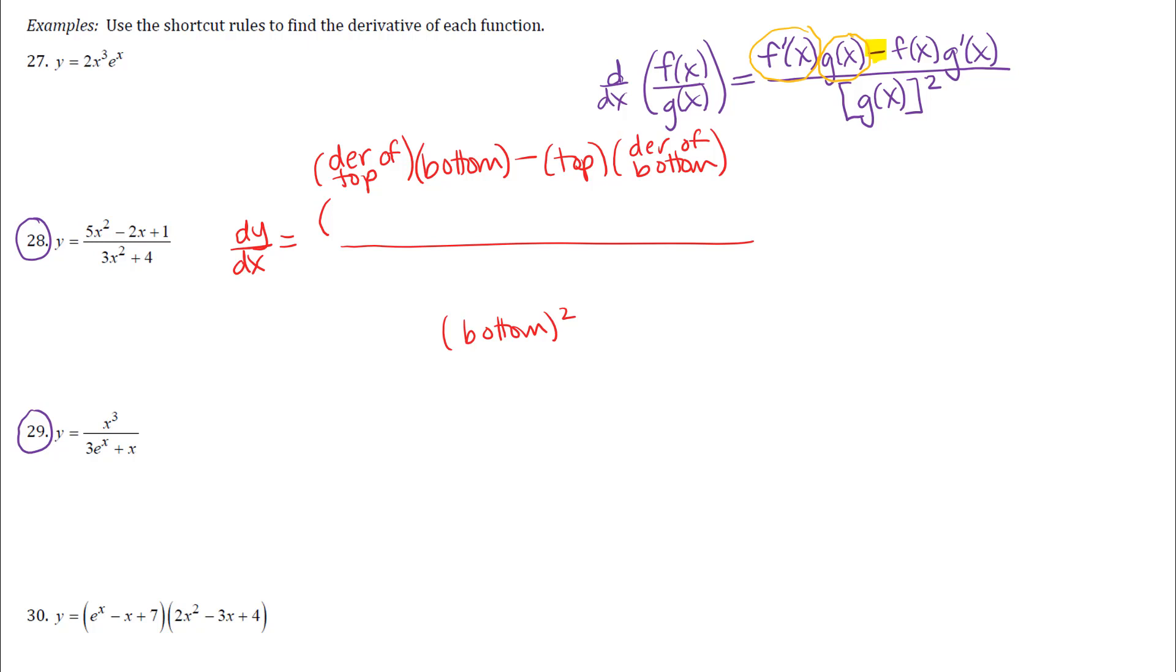I'm going to start by taking the derivative of the top, so the derivative of 5x squared minus 2x plus 1. So I will have 10x minus 2, the derivative of 2x is 2, and then plus 0 if you want to write that, the derivative of 1 is 0. I'm not going to write it on this one. Derivative of the top and then I'm using my cues up here so that I don't get lost and forget what I was doing.